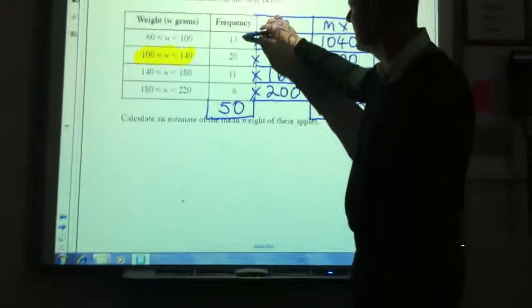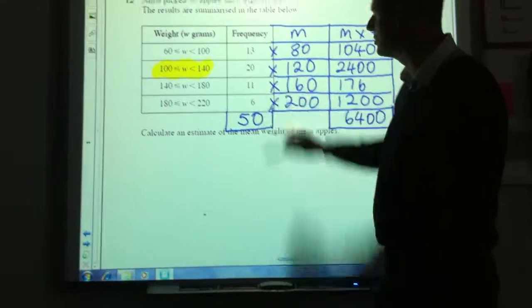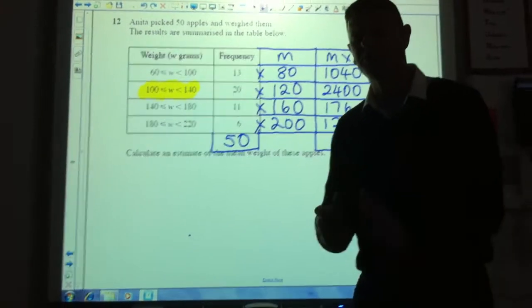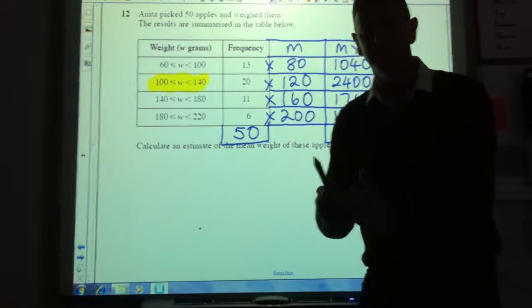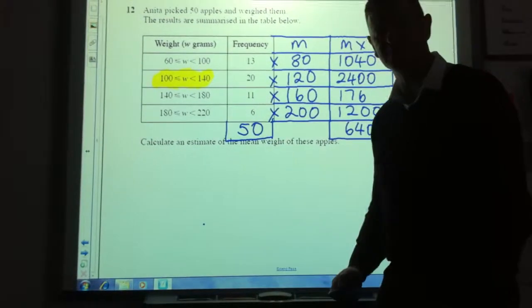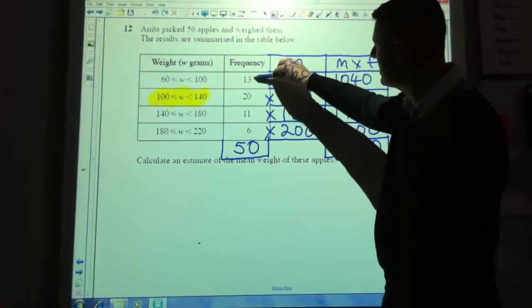So what we have to work out is how far down this list the 25th apple comes. I'm choosing the 25th apple because that's in the middle. The median is in the middle of 50 apples. There are 13 apples here,